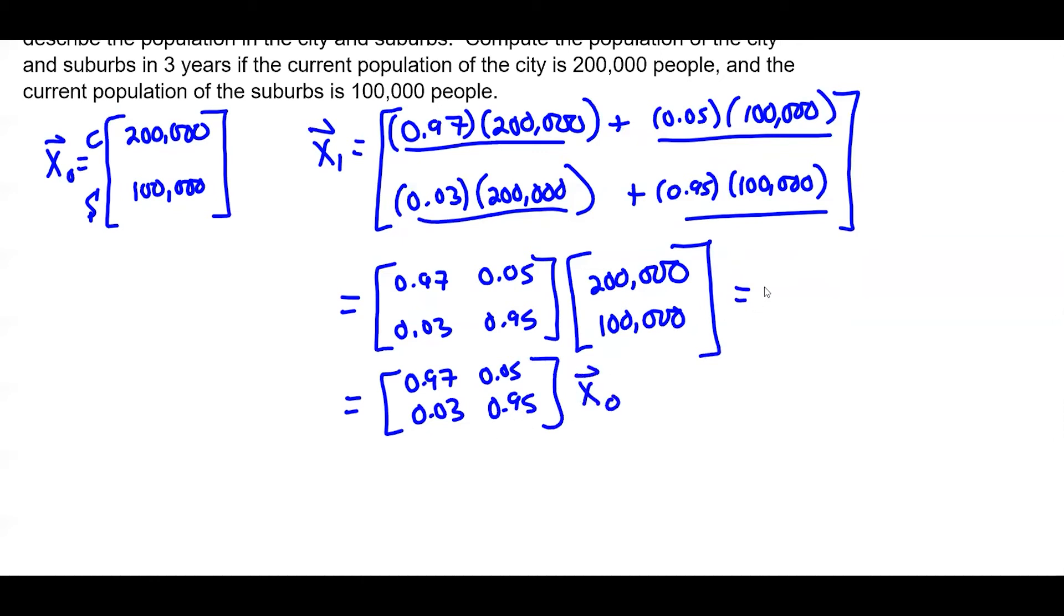Let's see what it actually is. Let's actually multiply this out. So I'm just going to quickly use a calculator. So after one year, the city will have 199,000. And let me do the suburban population. The suburban population gained 1,000. So now they have 101,000.